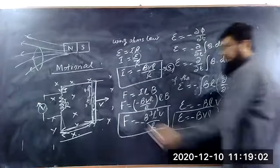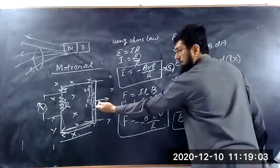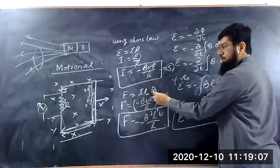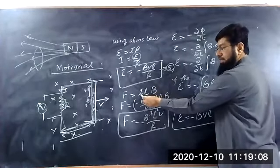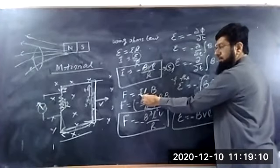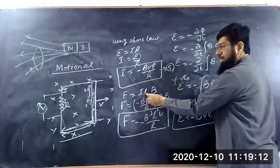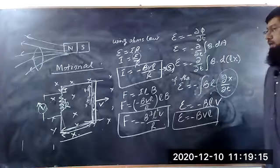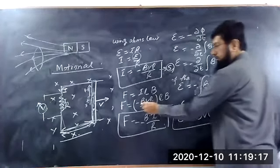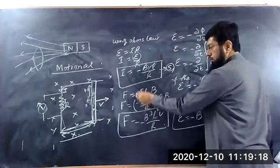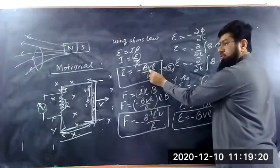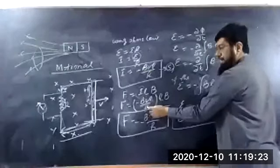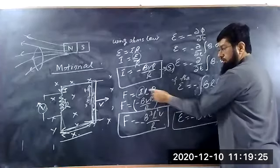The force on this wire, when it is moving in a magnetic field, is equal to I, L, and B — where I is the induced current in the wire, L is the length of the wire, and B is the magnetic field. So this force is equal to, if we substitute the value of induced current, this is equal to BVL upon R, multiplied into L.